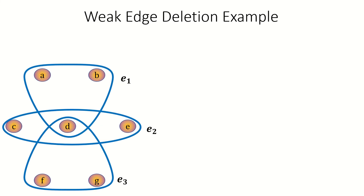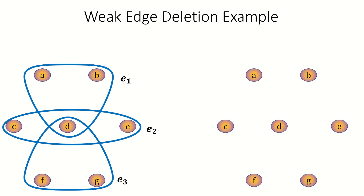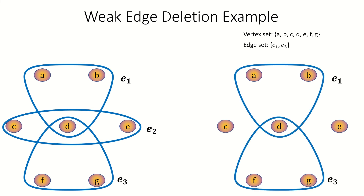Let's find the result of weak deletion of edge e sub 2 from this hypergraph. First, the vertex set of our new hypergraph will be the same as the original vertex set. Next, the edge set of our new hypergraph will be our original edge set, excluding e sub 2. This is our resulting hypergraph H minus e sub 2.